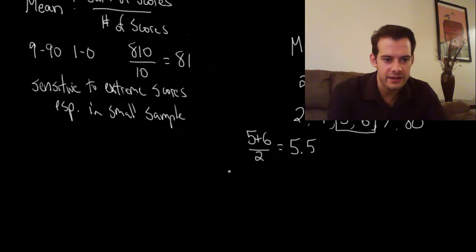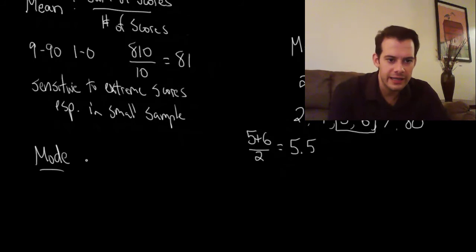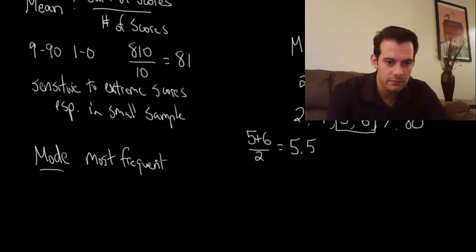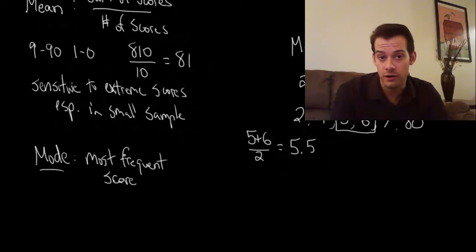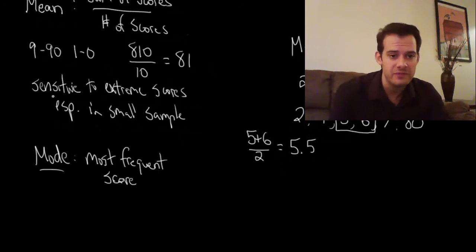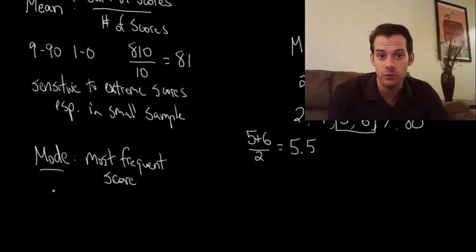The last measure of central tendency we'll look at is the mode. The mode is the most frequent score. To find it, we look at all of the scores and count how many times each score occurred. Going back to our first example: 90 occurred nine times and zero occurred one time, so 90 was the most frequently occurring score — 90 would be the mode.